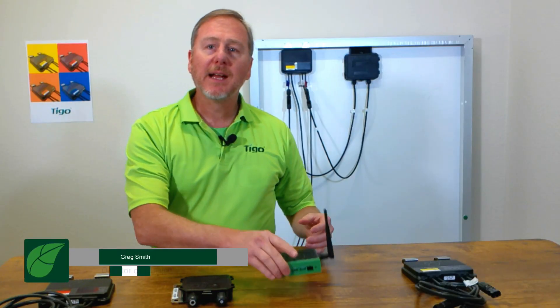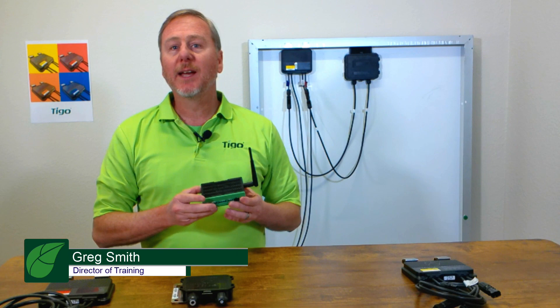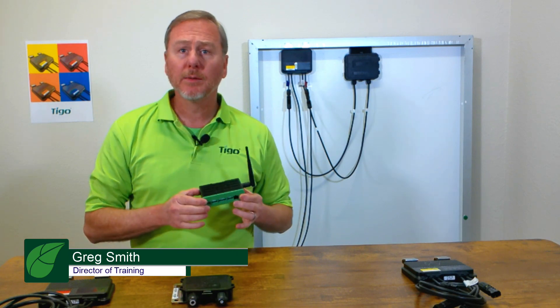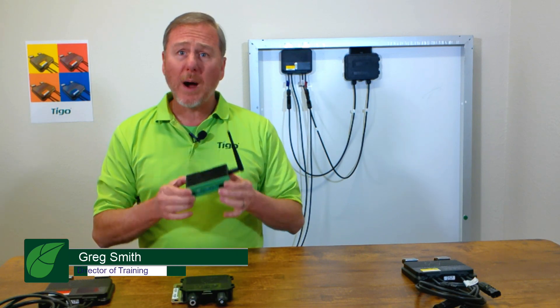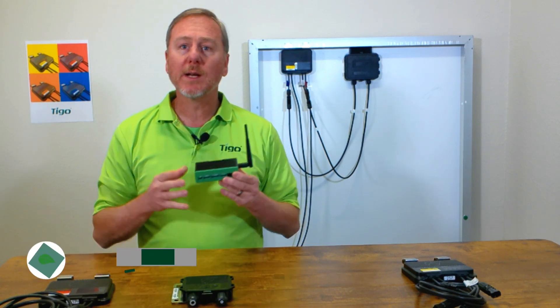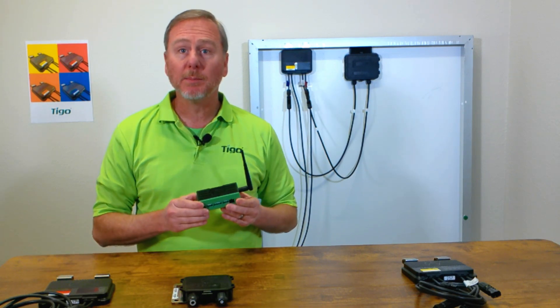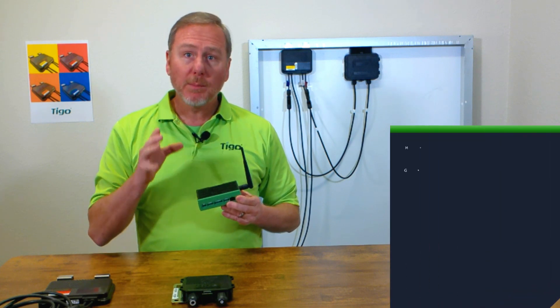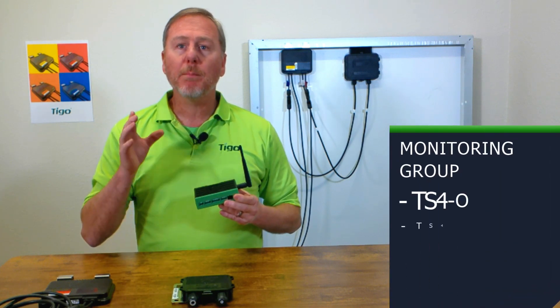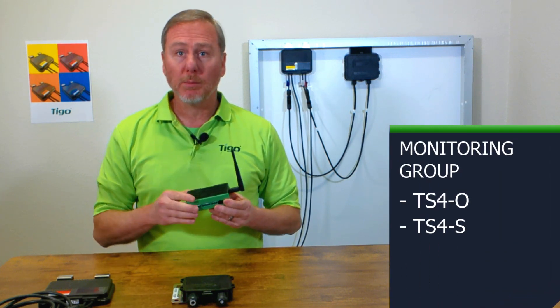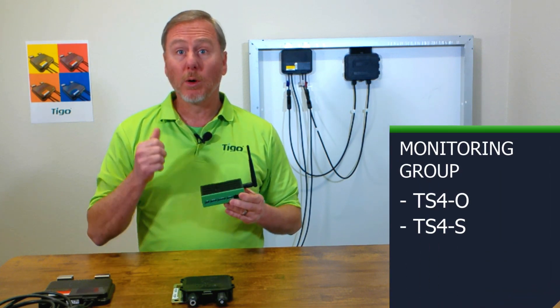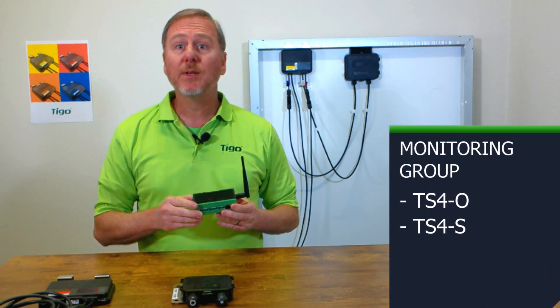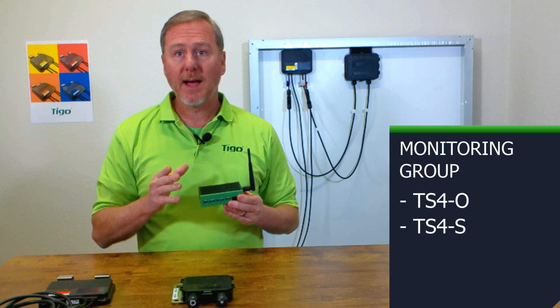The Cloud Connect Advanced, or CCA, is a powerful data logger that talks wirelessly to the rest of the system for the components that are in the monitoring group — the TS4O and the TS4S.